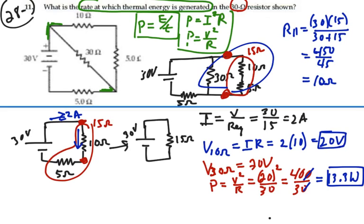So I have 13.3 watts dissipated in this 30 ohm resistor in the middle, and that is the answer we want. 13.3 watts.